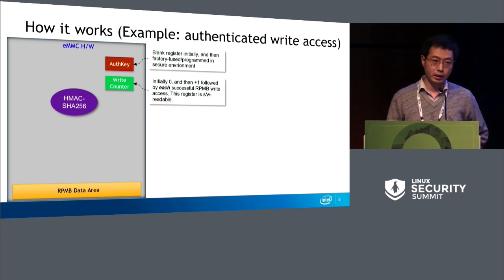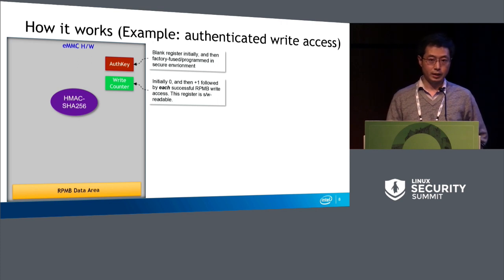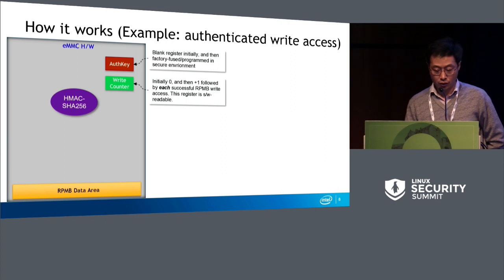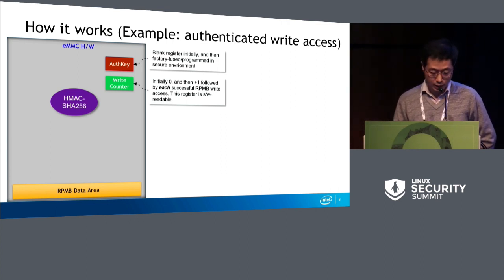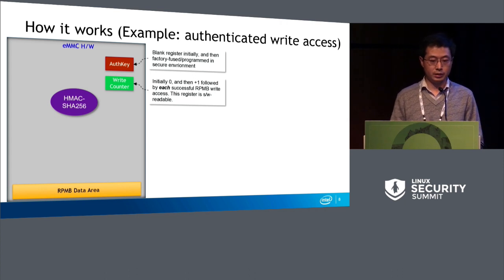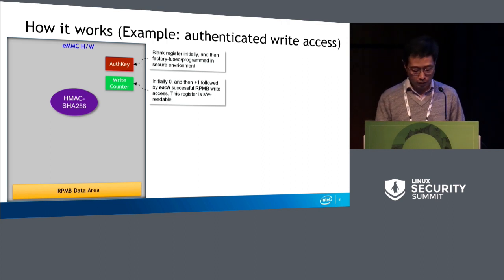The hardware also has a built-in monotonic counter. This counter can only be increased by the controller — by the hardware — following each successful RPMB write access. You cannot decrease the counter, you cannot change the counter, and you cannot reset the counter even after a power cycle.